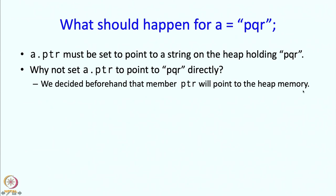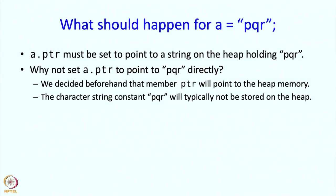Why are we doing that? If we know that ptr is only going to point to heap memory, then we can delete it. If there is a possibility that sometimes it points to the heap and sometimes to the activation frame, then we cannot delete it. Therefore, in order to be able to delete it confidently, whatever data it points to should always be on the heap. And therefore we must first copy the character string constant to the heap.